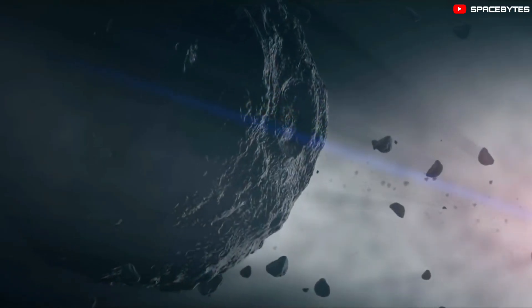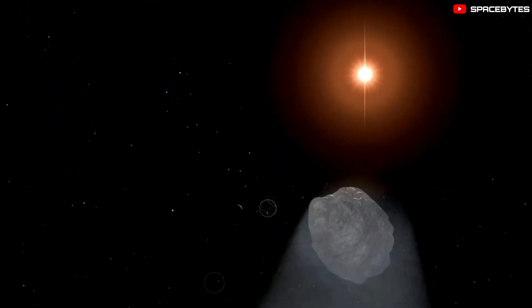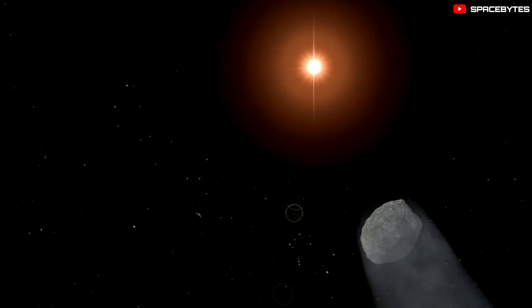An asteroid is a rocky object that orbits the Sun like the planets. However, they are significantly smaller in size.